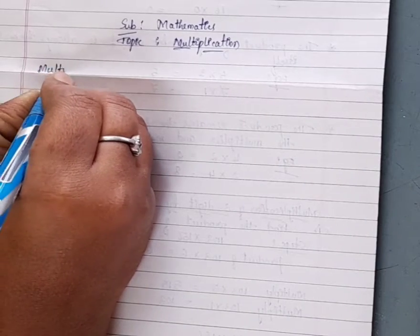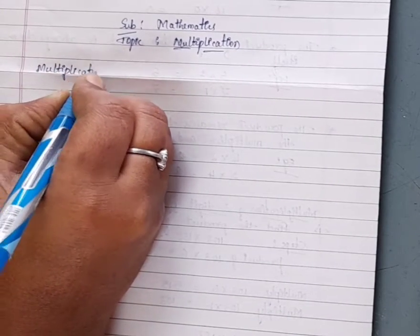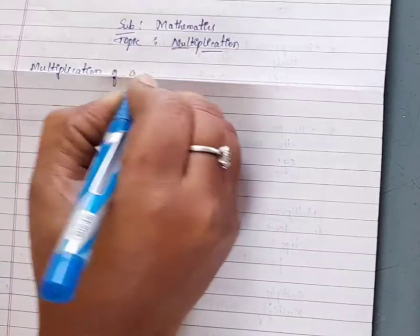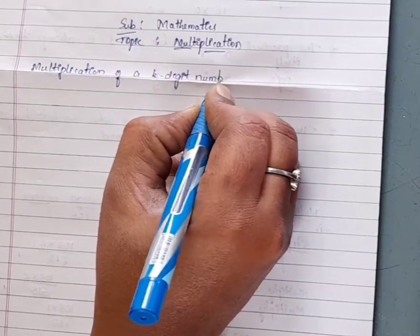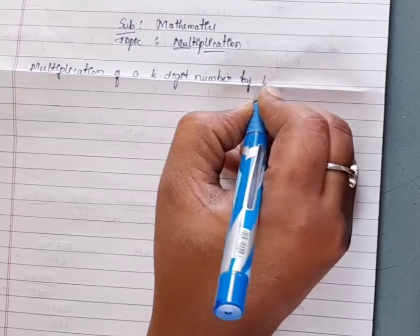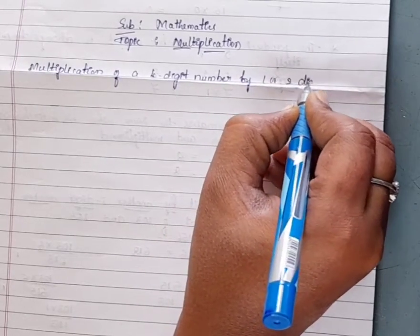Hello everyone. In our last class we learnt about multiplication — properties of multiplication and multiplication of a 3-digit number by another 3-digit number. In this class, let us learn about multiplication of a 4-digit number by 1 or 2 digit number.